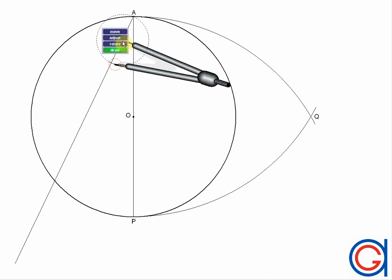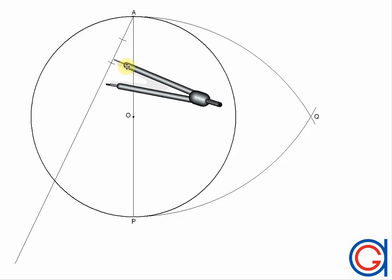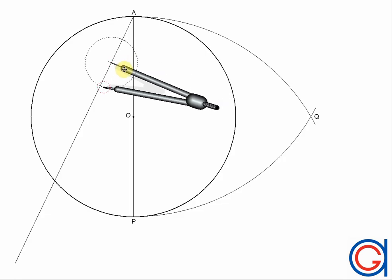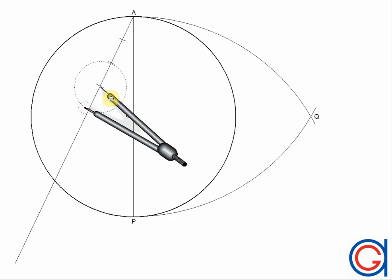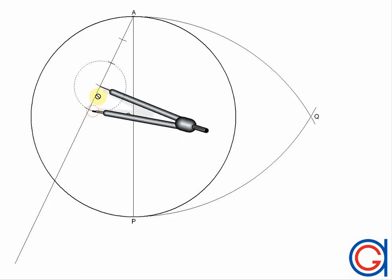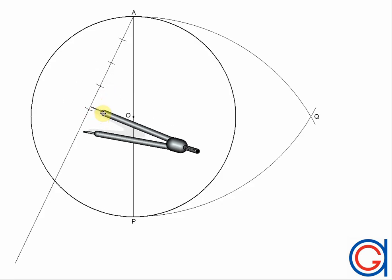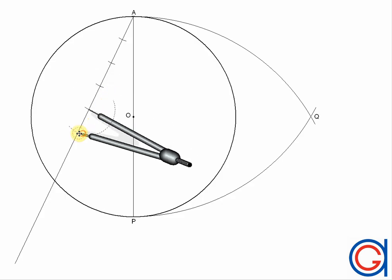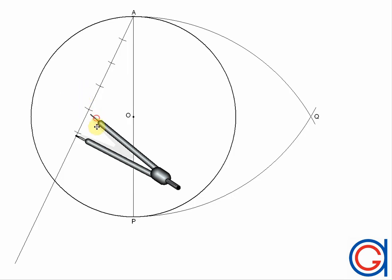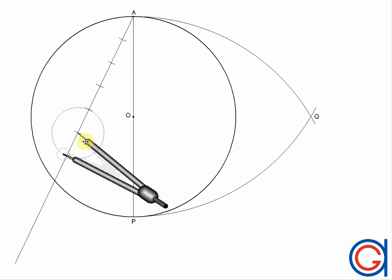First, we draw a line starting at point A with any angle to the vertical diameter as shown. After that, we will choose any given measurement — for example, two centimetres. Set your compass to two centimetres and scribe ten equal lines as shown. You can also do this using a ruler. Just remember that accuracy here is very important in this part of the exercise.